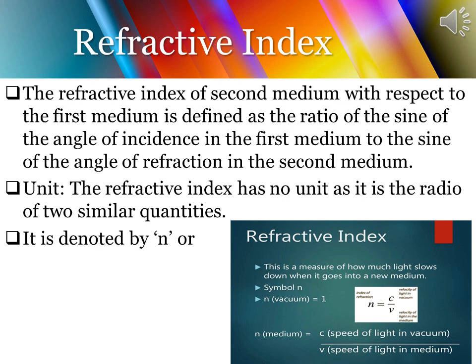In the formula, the refractive index is given by the ratio of the speed of light in vacuum to the speed of light in the medium. The refractive index of a medium defined with respect to vacuum is termed as the absolute refractive index. But if instead of vacuum we take the ratio of speed of light in one medium to speed of light in a second medium, it is termed as the refractive index of the second medium with respect to the first medium.